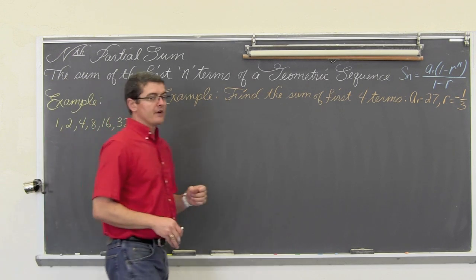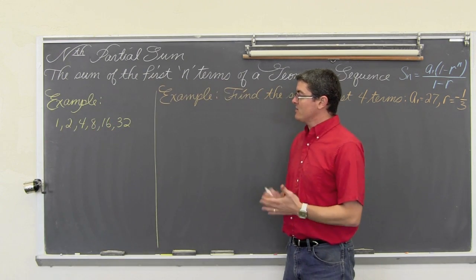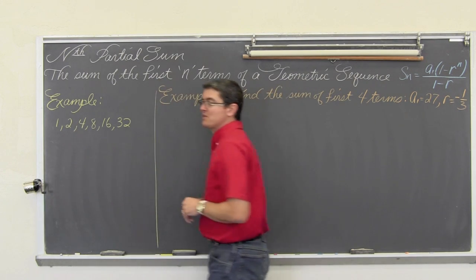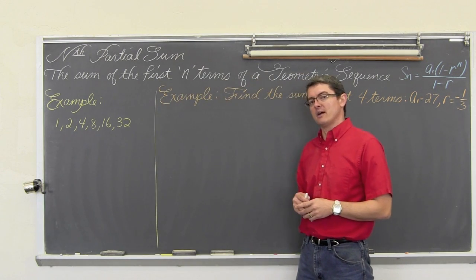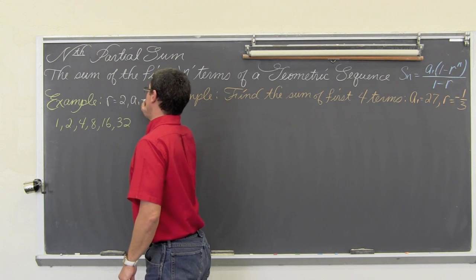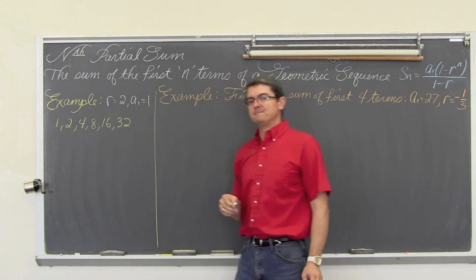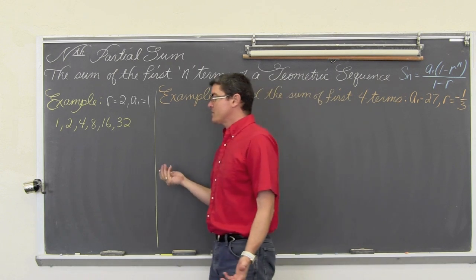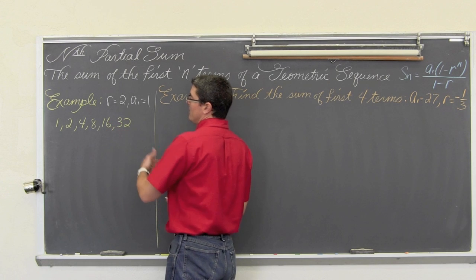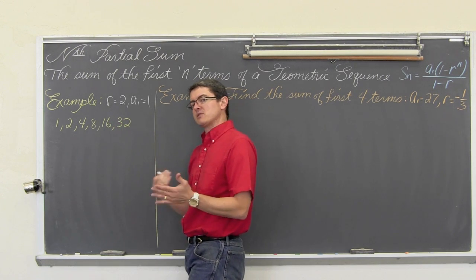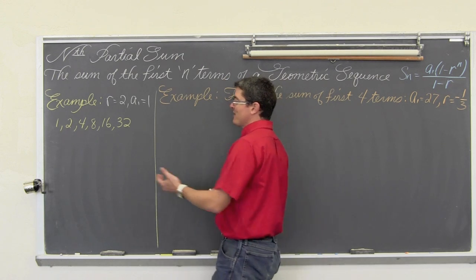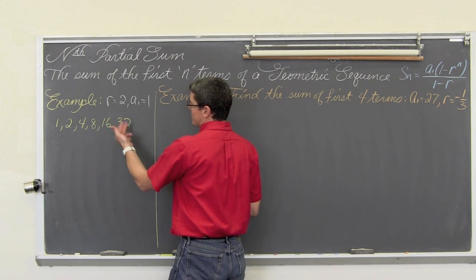Our first example is a very straightforward question. We have the values 1, 2, 4, 8, 16, and 32. This is clearly a geometric sequence because all we are doing is multiplying by 2. So we have an r value equal to 2 and an a sub 1 value equal to 1. To find the partial sum of these first six terms, which we can do in our head, but for teaching purposes we like to start with small numbers.